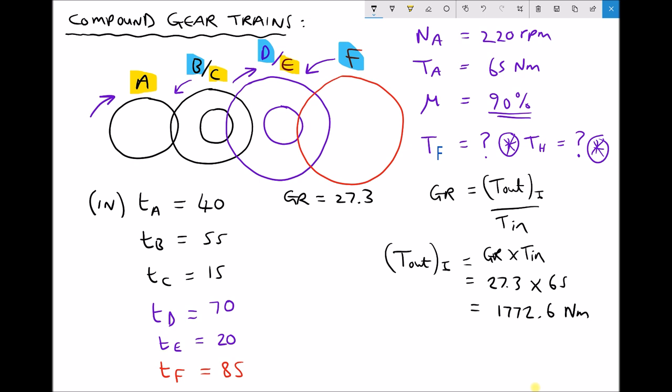So a very large ideal output torque. However, T out actual is T out ideal times our efficiency. And our efficiency of 90% as a decimal is 0.9. So in actual fact, our output torque is only 90% of the ideal value of 1772.6. So multiplying 1772.6 by 0.9 gives an actual torque of 1595.3 newton meters.